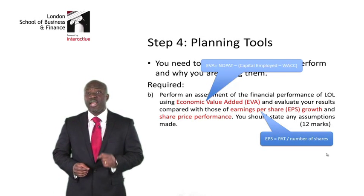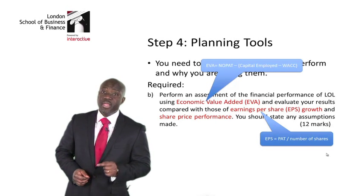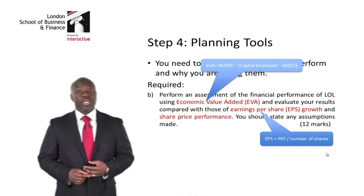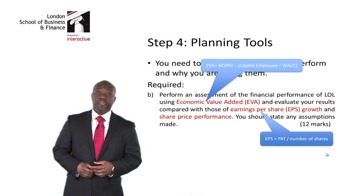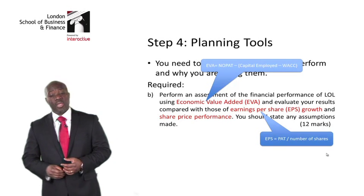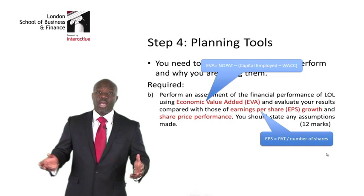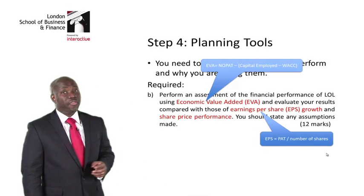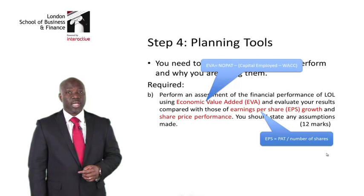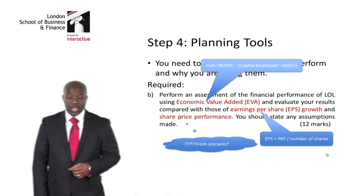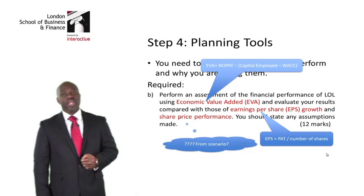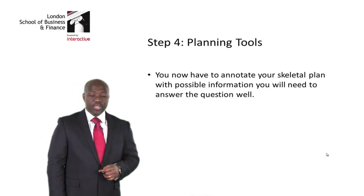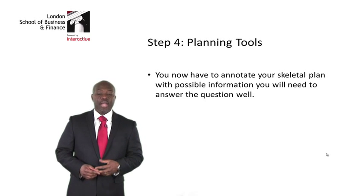By knowing the EVA formula, I know I need to calculate NOPAT and economic capital employed, and I need to think about the possible adjustments required. I also need to calculate WACC. For EPS, I need PAT and the number of shares. Share price information is something I may get from reading the scenario. Once I've done that, I need to annotate my skeletal plan with the information I need to answer the question well.